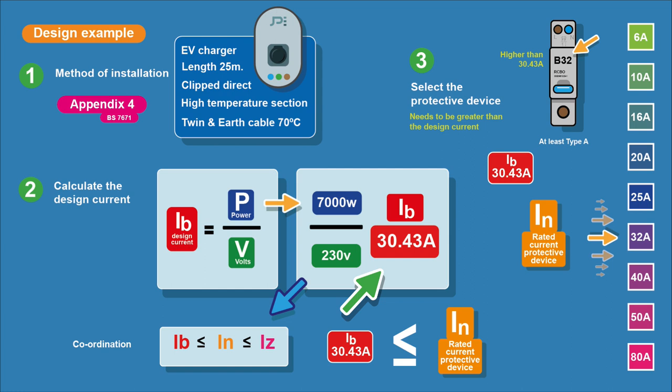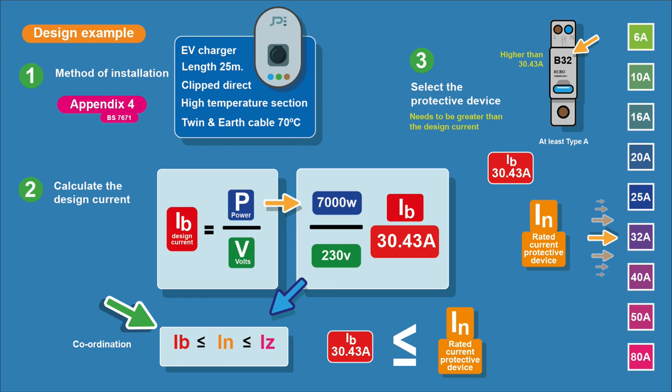Next we select the protective device. This is the IN, the rated current of the protective device — the rating printed on the device itself. Following our coordination, IB must be less than or equal to IN. The next size up from 30.43 amps is a 32 amp protective device. There are other things to consider for an EV charge point: we're using an RCBO, it has to be double pole with switched neutral. Because the EV charger can produce DC current, we need a protective device that can handle that — so it needs to be at least Type A. So our IN is 32 amps and coordination is achieved.